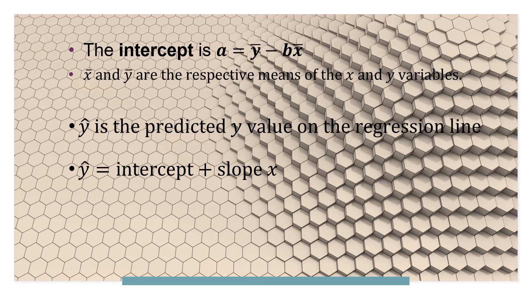So y-hat, the predicted value, will be intercept plus slope times x. If we can find the slope and intercept using the values of x-bar, y-bar, sx, sy, and r, we can easily get the regression line.